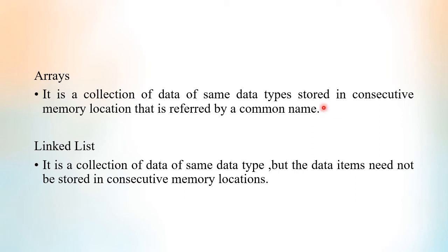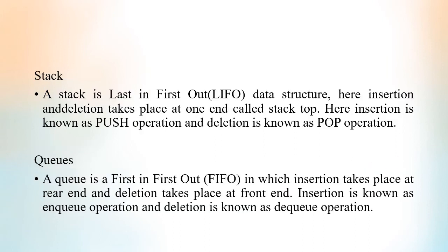Arrays are a collection of data of the same data type and the elements are stored in consecutive memory locations. Linked list is also a collection of data of the same data type, but the data may not be stored in consecutive memory locations. Stack is a data structure which follows last-in first-out order, and the two operations performed are push and pop.